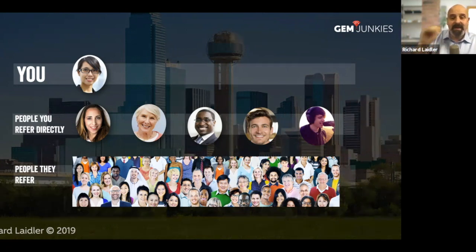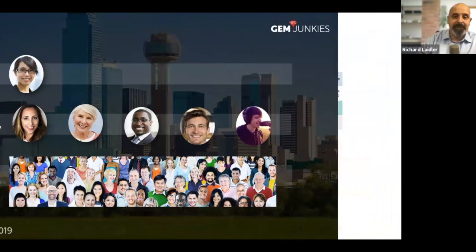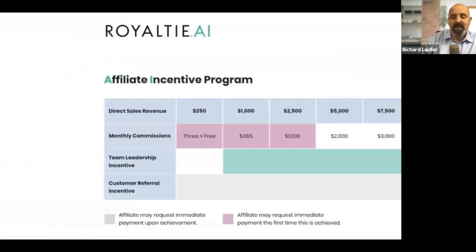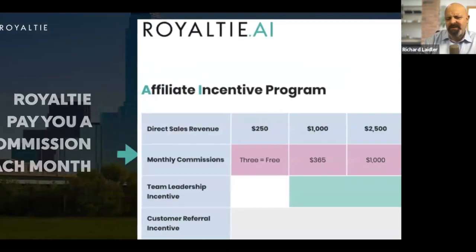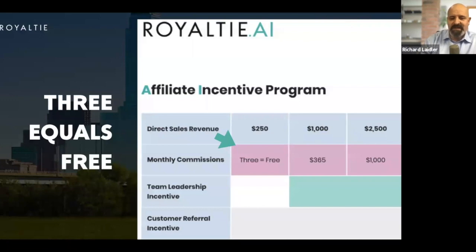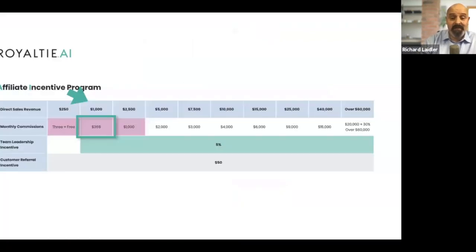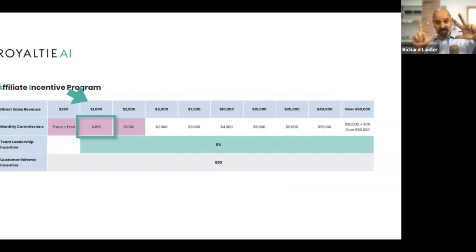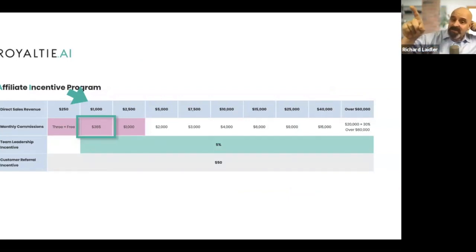Directly and indirectly, she gets paid on both of those levels. Here's how the money works. Refer it to three folks — that's around $261. 87 plus 87 plus 87 is $261. That gets you up to the $250 level, and you're basically going to get your platform for free. But if your three people want to get it for free by referring three, that's actually going to take your revenue going up to Royalty to $1,000, and Royalty are going to pay you $365 for that.